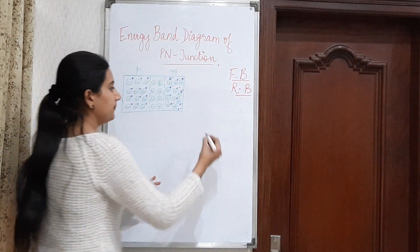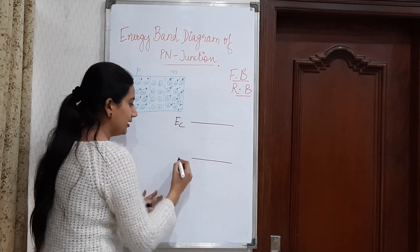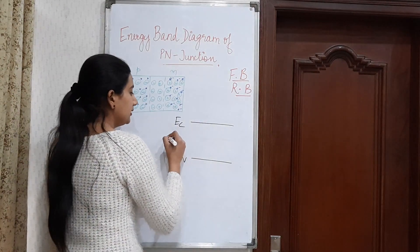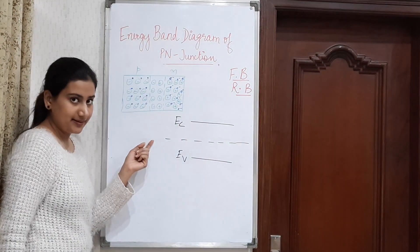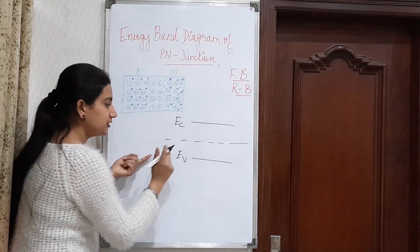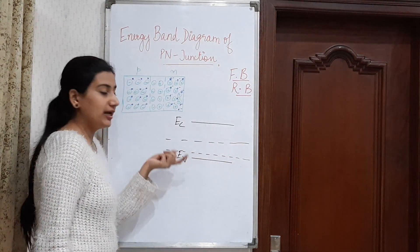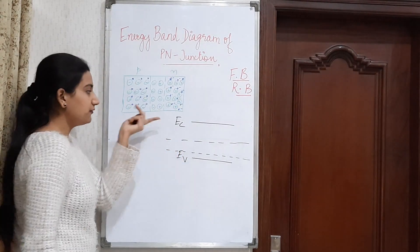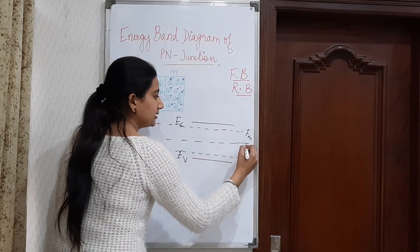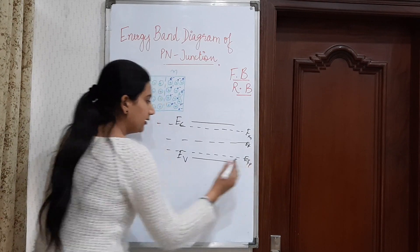We know that the energy band diagram of a semiconductor has a conduction level and a valence level. For an intrinsic semiconductor, the Fermi level will be at the center. For P-type semiconductor, the Fermi level shifts downwards towards the valence energy level. For N-type semiconductor, the Fermi level shifts upwards towards the conduction level. This is the basic energy diagram for semiconductors.